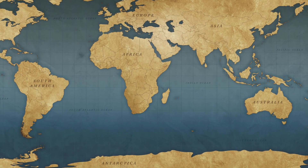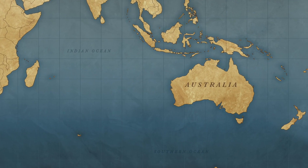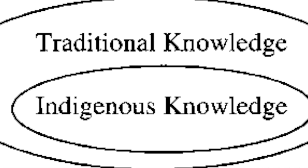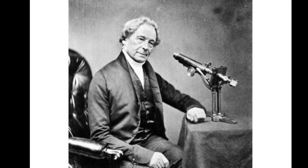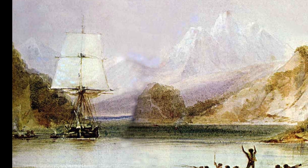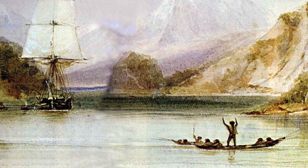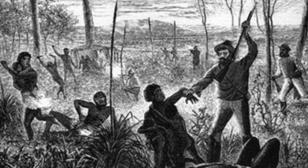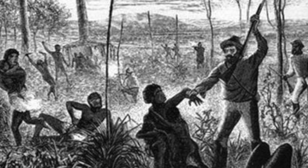He was born in September of 1872 at the Point MacLean Mission in South Australia, during a time where Western science was universal and thought to be the center of legitimate knowledge. David was born during the Protection Era, where Aboriginal people were seen as needing to be protected either from the rest of society or from themselves, resulting in segregation and forced removal and isolation.